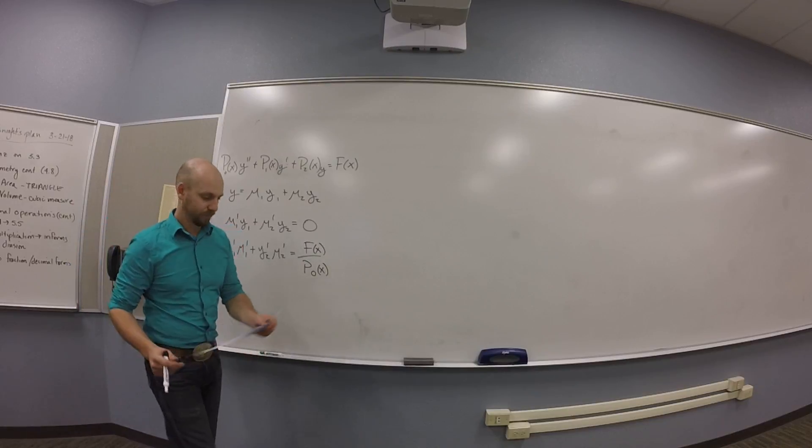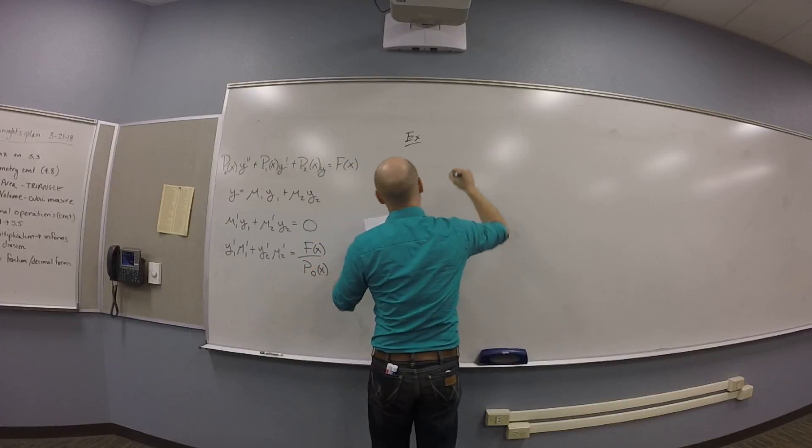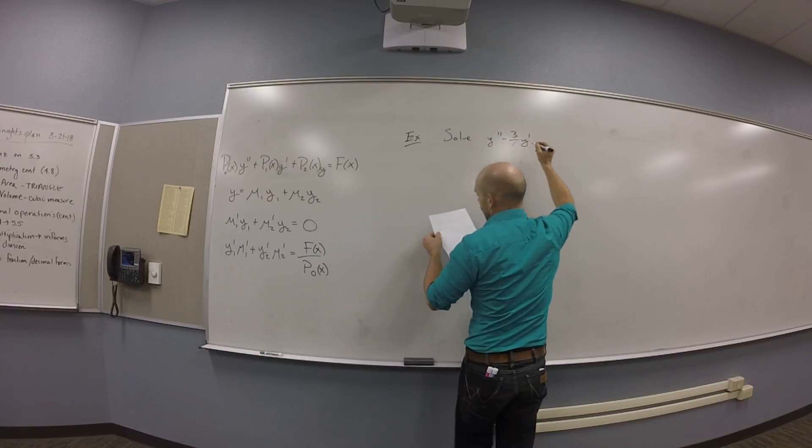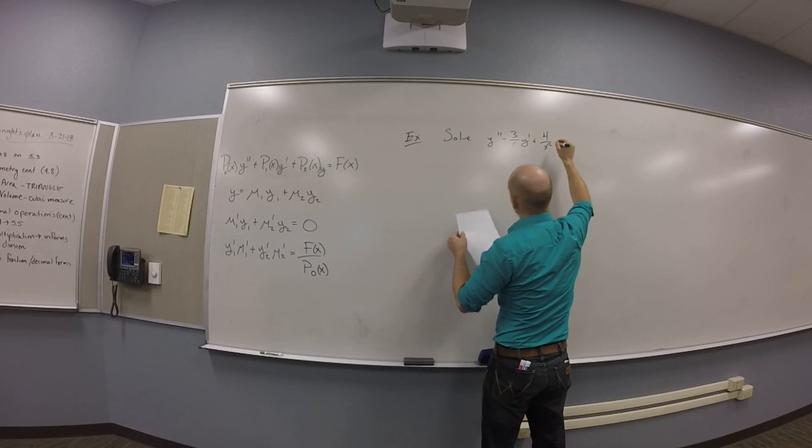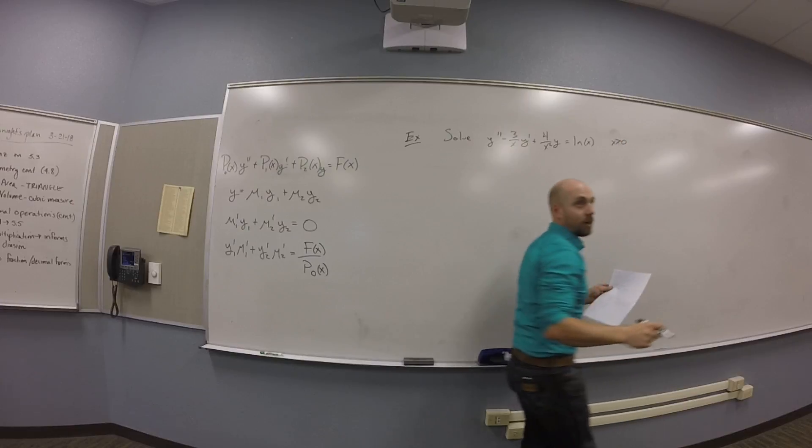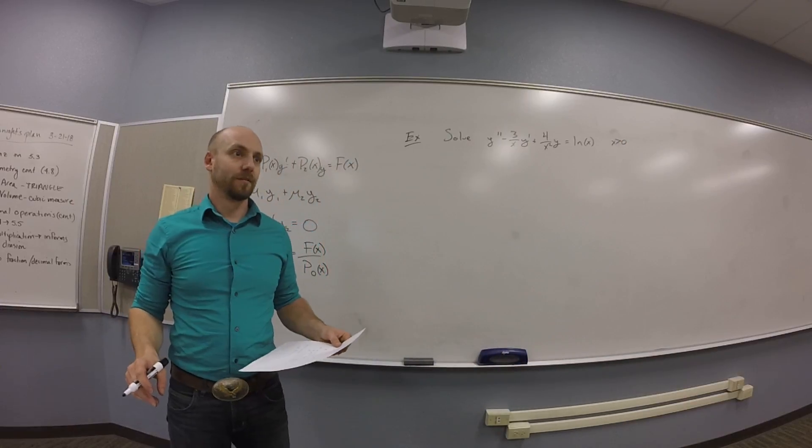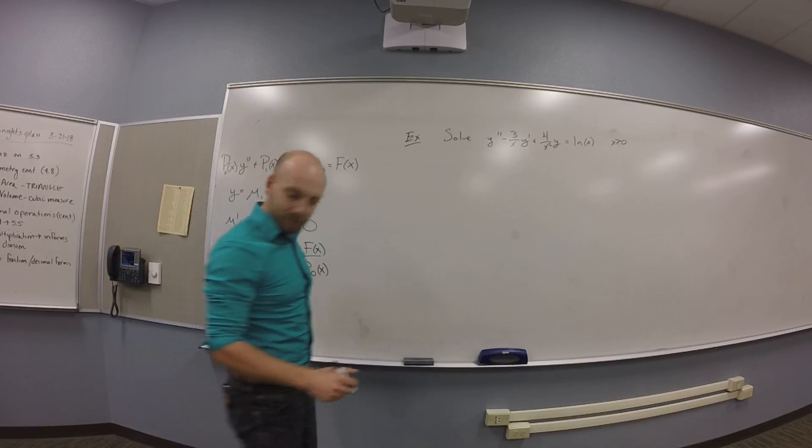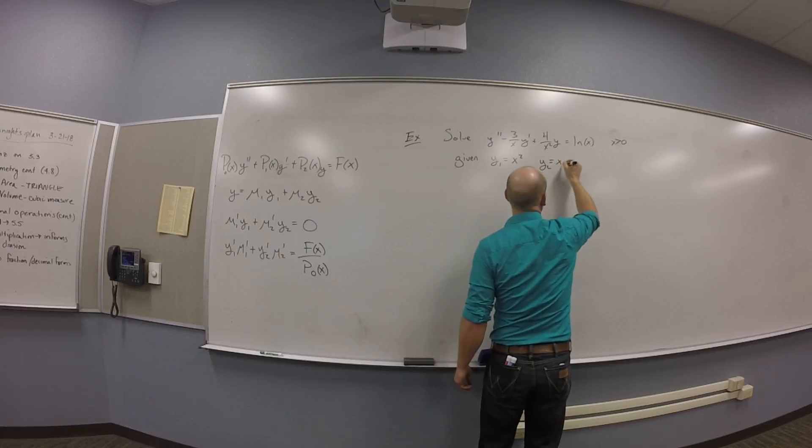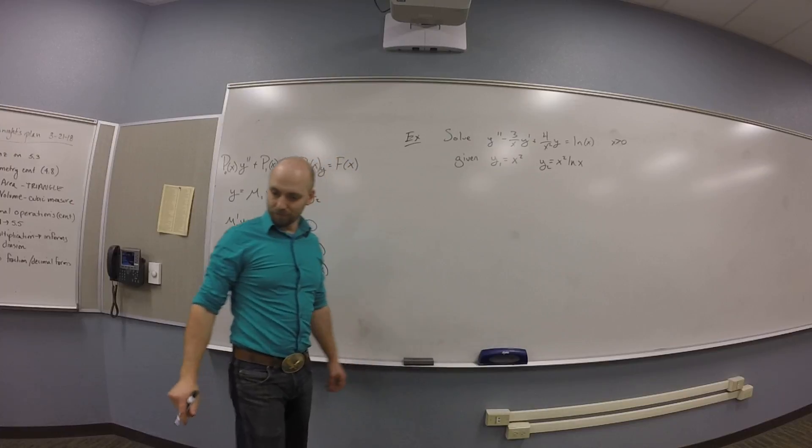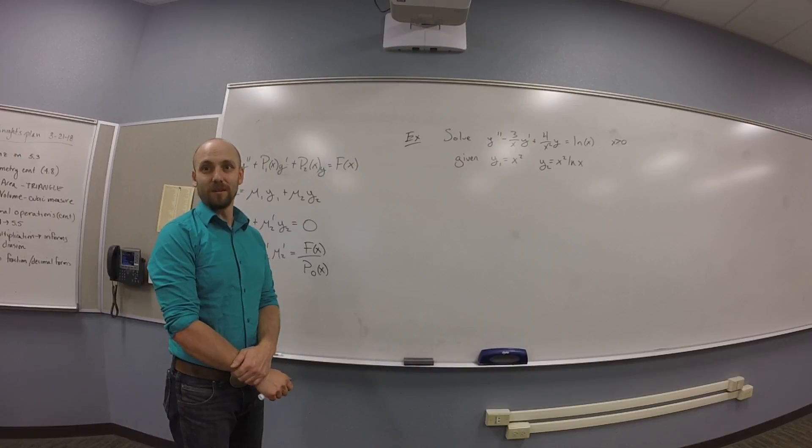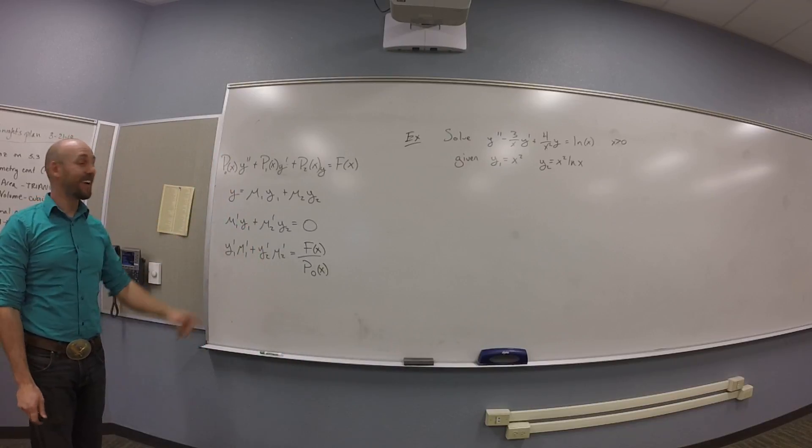So let's use this to solve one. Solve Y double prime minus 3 over X Y prime plus 4 over X squared Y equals the natural log of X. And obviously we're going to have to assume that X is strictly greater than 0, right? And given some solutions, Y1 is X squared and Y2 is X squared log X. Cool. All right, thoughts? Don't think very hard. Go look at this thing.